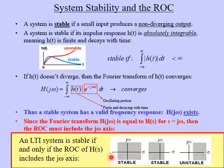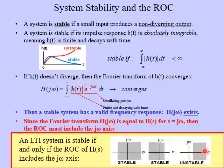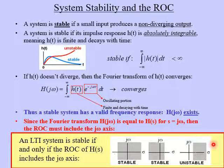Let's look at three examples. In this first picture, the region of convergence is the shaded region — we can immediately see that the j-omega axis is inside the region of convergence, therefore the system is stable. Here's another example of a stable system; again the j-omega axis is inside the region of convergence. In this third example, the region of convergence does not include the j-omega axis, which means this particular system is unstable. It's a very quick and simple test to look for stability.